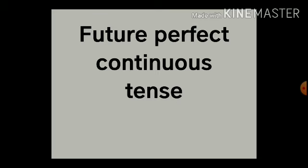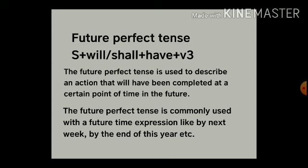We are going to discuss about future perfect continuous tense today. As usual, before getting into it, we can have a quick recap about what we learned in the previous session. We learned about future perfect tense. The verb structure is will or shall plus have plus V3 — we can stick to will plus have plus V3 since shall is not used nowadays.